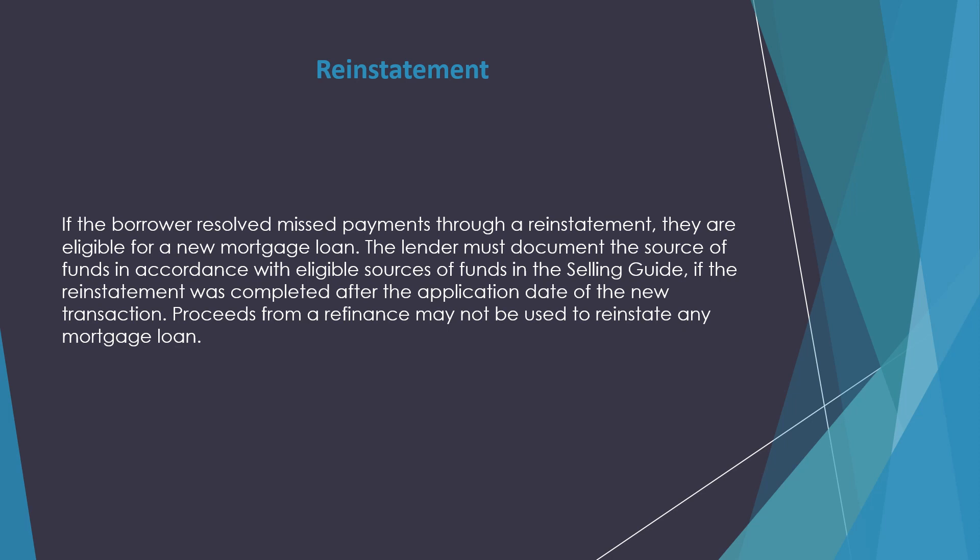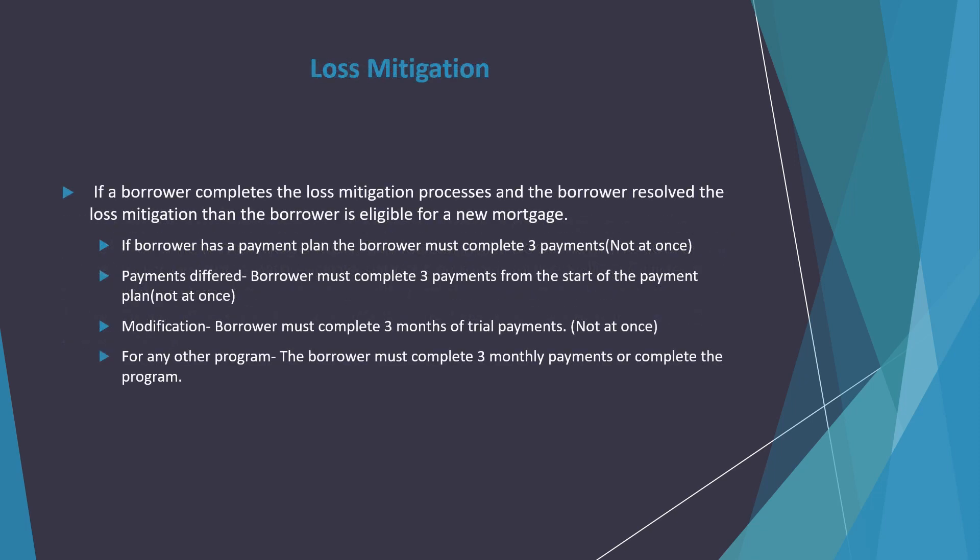The reinstatement cannot be paid from the proceeds of a mortgage. Please make sure you look at your mortgage statement and your payoffs — most of the time those documents will clearly identify if a borrower is in a forbearance and how much they currently owe. For loss mitigation due to COVID-19, just think three payments and not all at once, and you're golden.